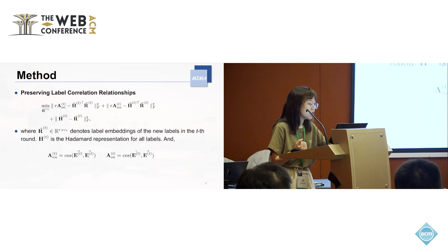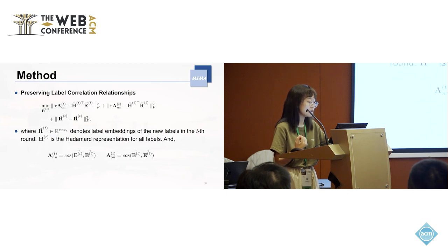Inspired by the most used term in the hashing domain for encoding pairwise similarity, that is the inner product term, we design the following loss function to learn the representation of class labels. Our loss is A minus HR. R is the representation of the new labels in the current run, and H is the Hadamard representation for all labels.